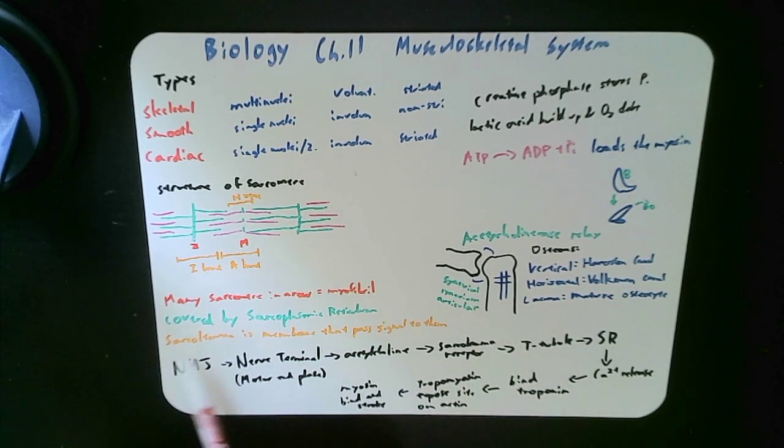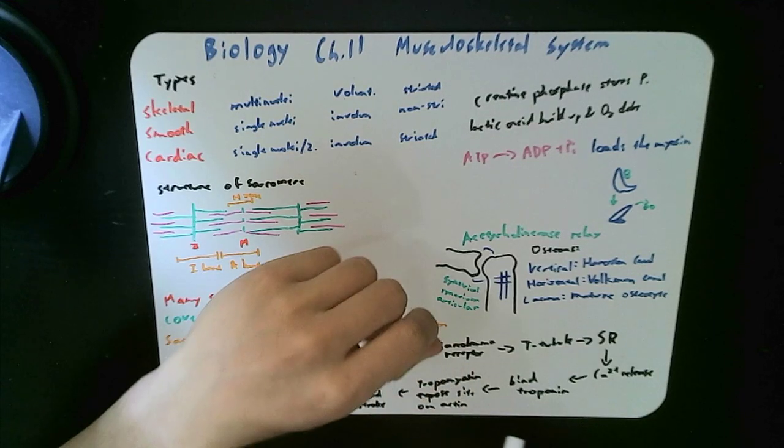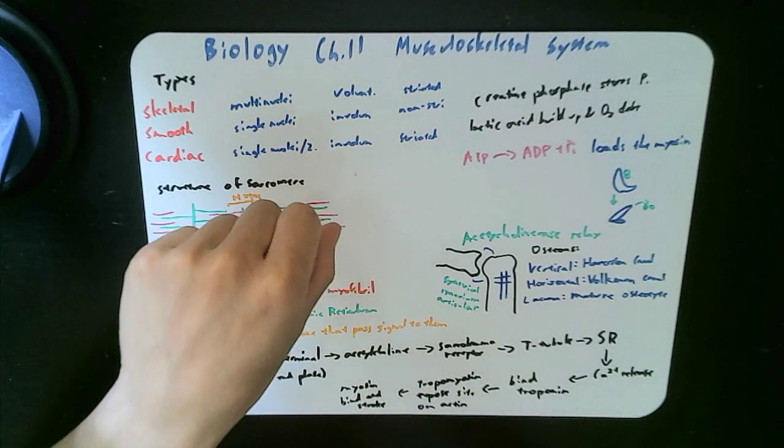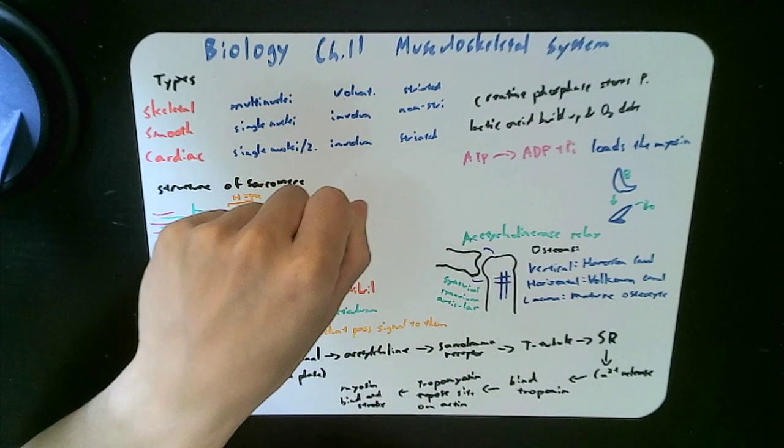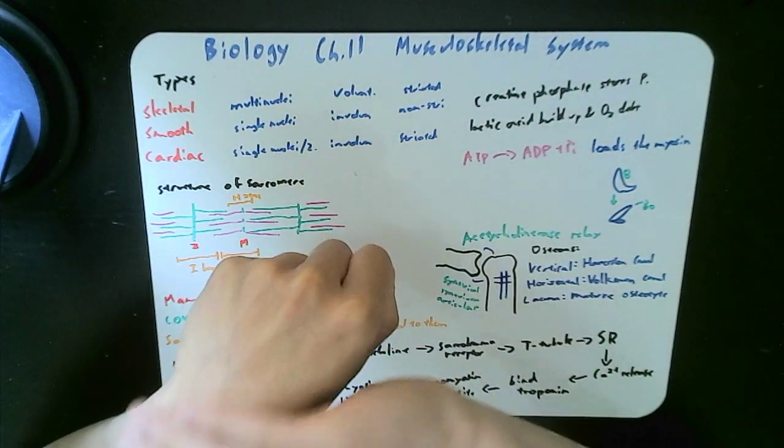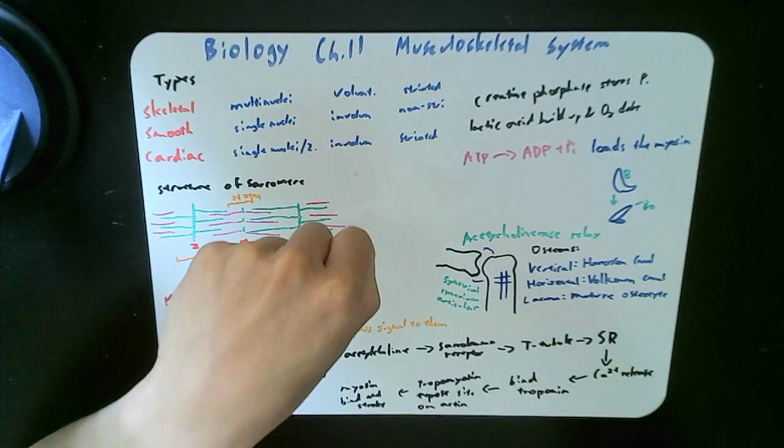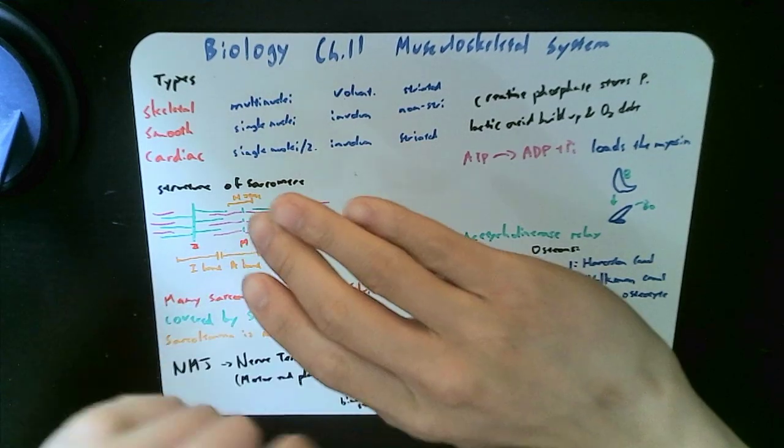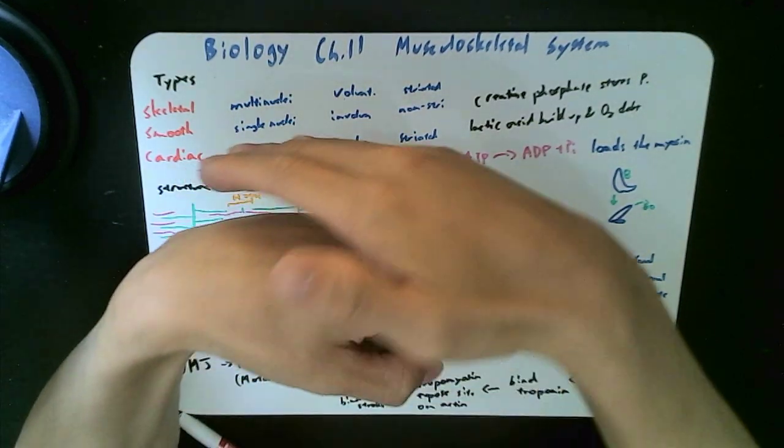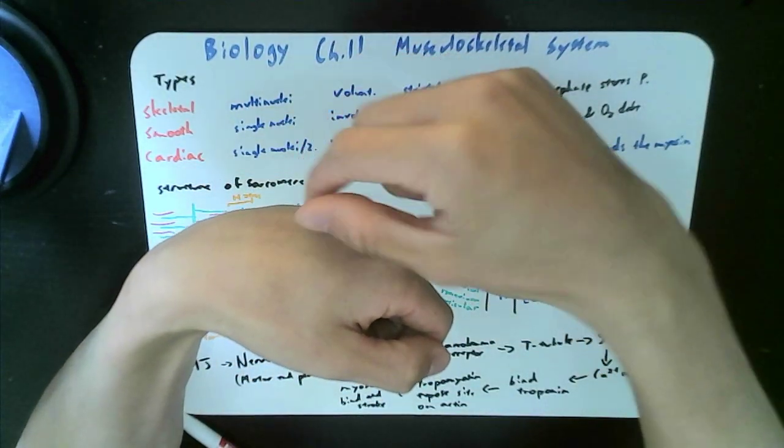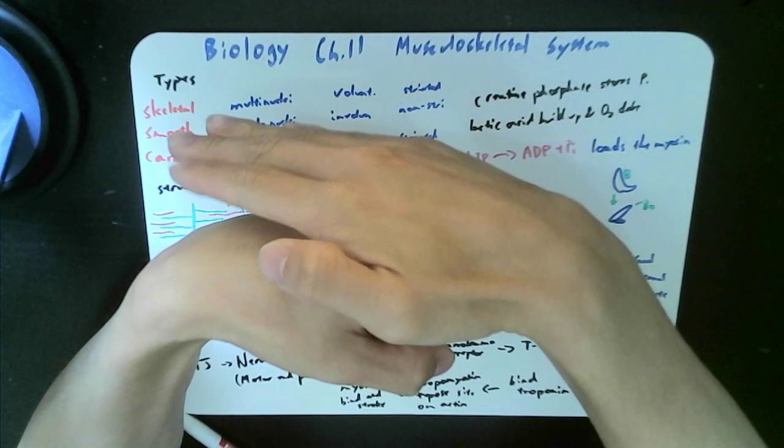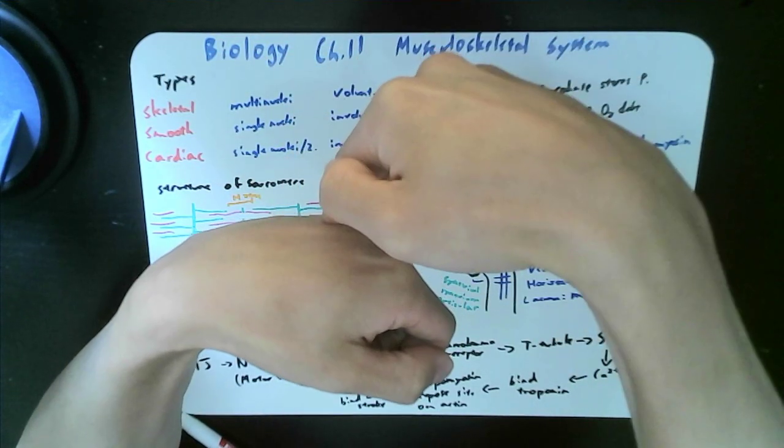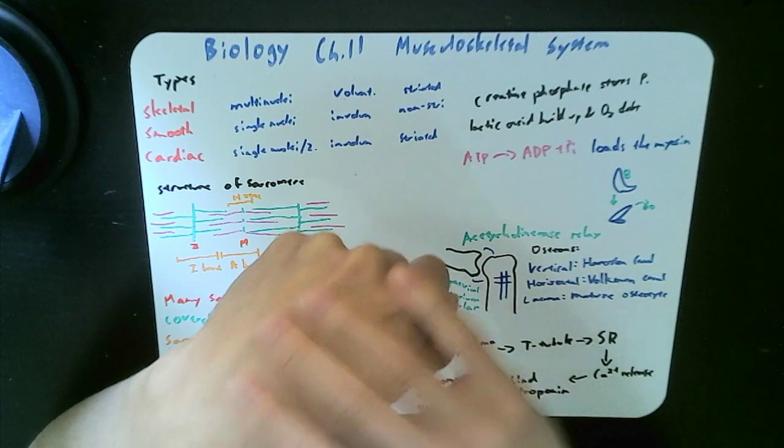And those bind to the sarcolemma receptor. Remember sarcolemma is the membrane. And that allows the sarcolemma receptor to pass the signal down to the t-tubule into the sarcoplasmic reticulum. So think about the layering outside is the sarcolemma. You pass the signal to the sarcolemma and in between it, there's a little space and it transfers down to the t-tubule, transverse tubule straight down to the sarcoplasmic reticulum.